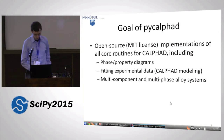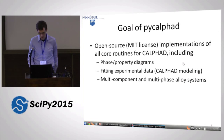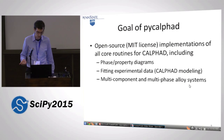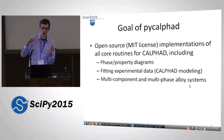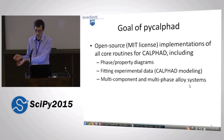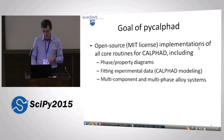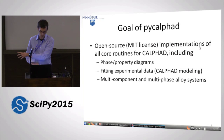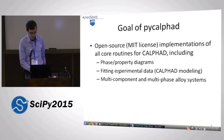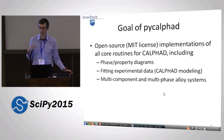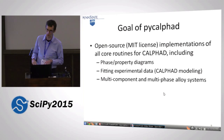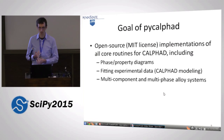Our goal for PyCALPHAD is to develop permissively open source licensed implementations of all the core routines for CALPHAD, including phase diagrams, property diagrams, and also solving the inverse problem. So if I know roughly what my phase diagram looks like and I know something about the thermodynamic properties of a material, can I fit a model? A lot of this is: I have a model and want to calculate the diagram, but we also want to go the other way. This specifically deals with multi-component and multi-phase alloy systems.